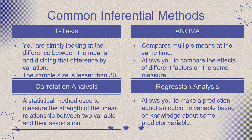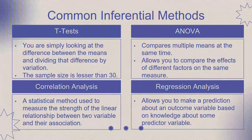Second is ANOVA, also known as analysis of variance, which is almost the same as the t-test. However, this compares multiple means at the same time, allowing you to compare the effects of different factors on the same measure. It also has different forms: one-way ANOVA for comparing three or more groups along the same dimension; within-groups ANOVA for comparing data from related groups; and factorial ANOVA for when you have two or more variables and want to explore if there are interactions between the factors.